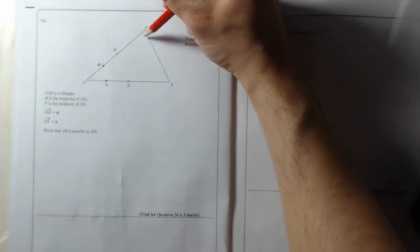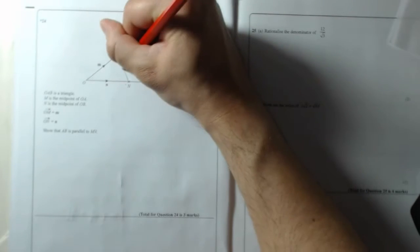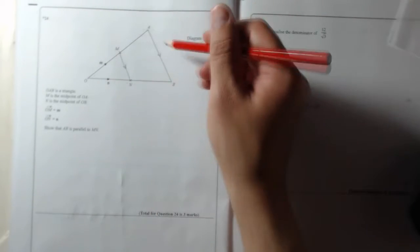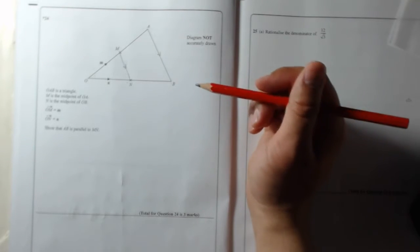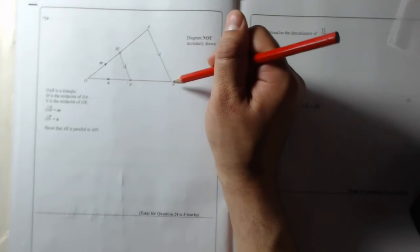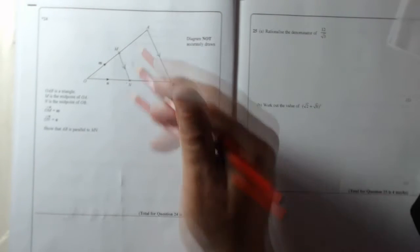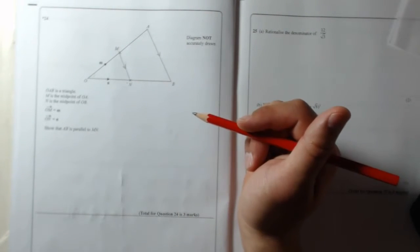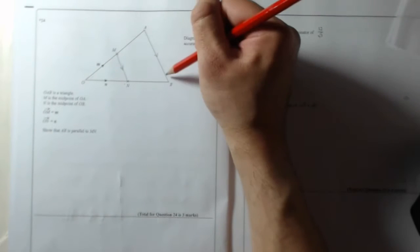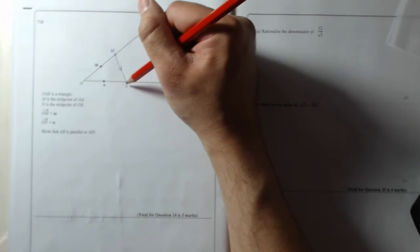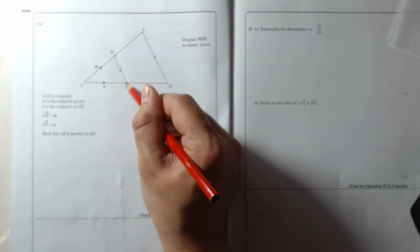Show that AB, so AB is that, show that it's parallel to MN, so show that they are parallel to each other. What we need to do now is we need to work out MN and we need to work out AB. And if AB is a multiple of MN, so whatever MN is, if AB is a multiple of it, then they are parallel because it means that AB is going in the same direction as MN, just further, because you can see it's longer.